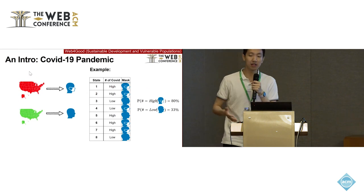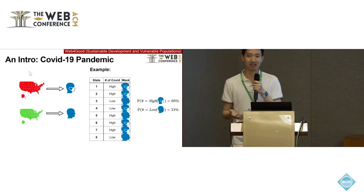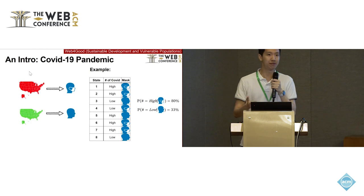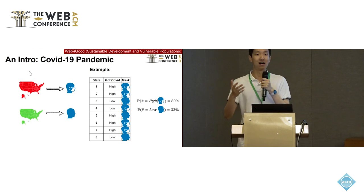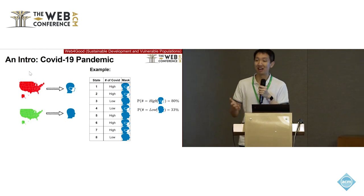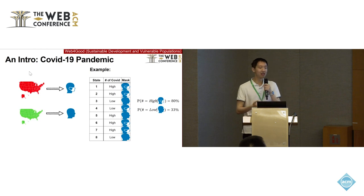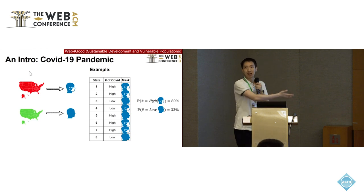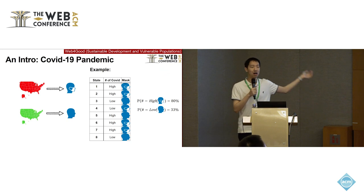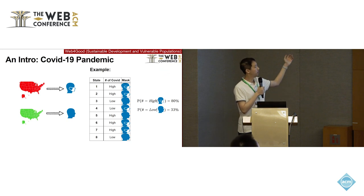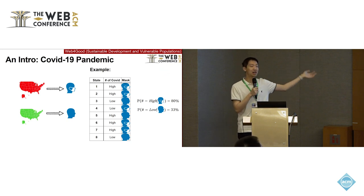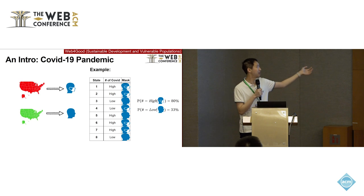To tackle this pandemic, the different 50 states announced many policies, such as wearing a mask, online teaching, no gatherings, and lockdown. Here we want to analyze and model the influence of these COVID-19 policies on the pandemic.